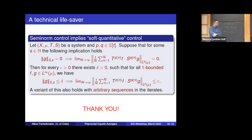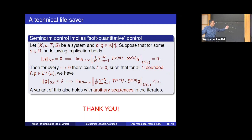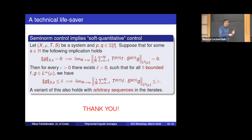Regarding the uniformity question: the δ does depend on the problem — it depends on the system. For a single transformation there is an argument giving independence of the system; for commuting transformations our argument gives exactly what we need: uniformity with respect to f and g but not necessarily the system.